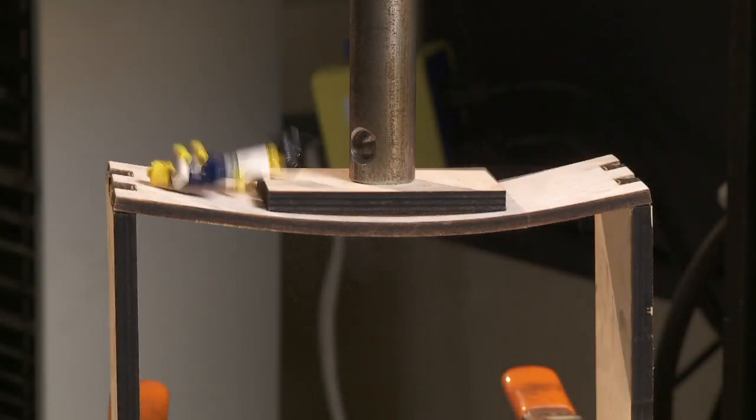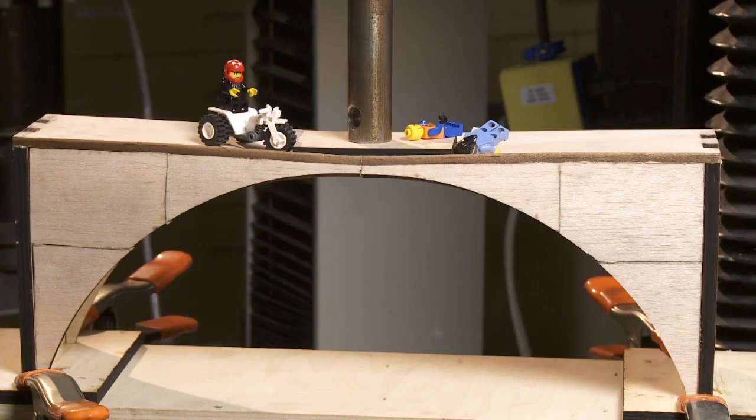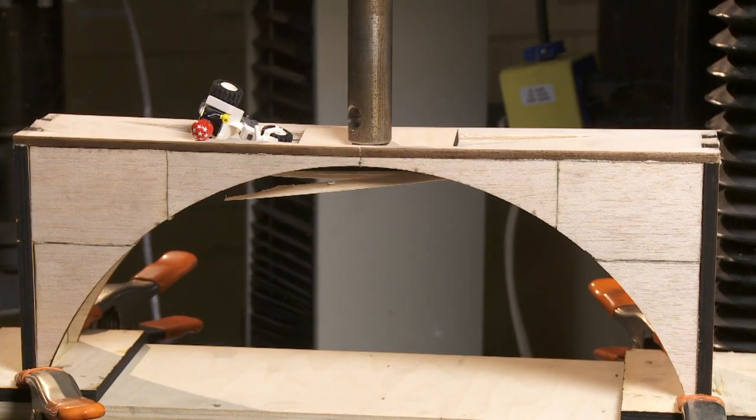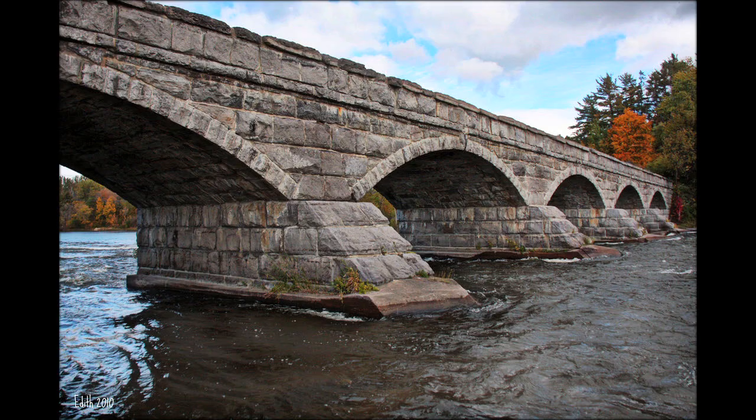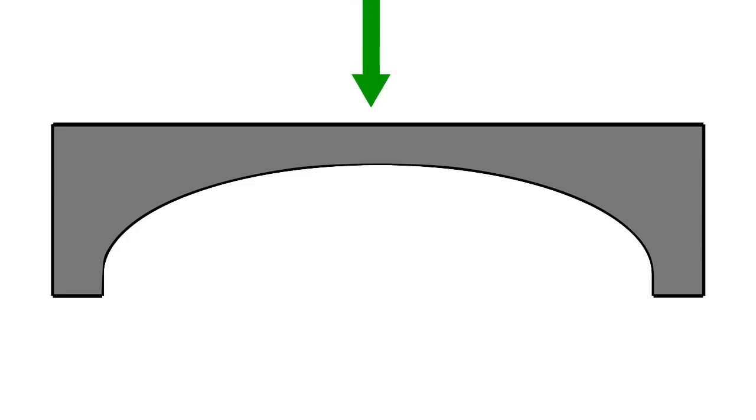Here we have seen that beam bridges get weaker as they get longer. Adding an arch makes the bridge very strong, but arches have length limitations. Beam and arch bridges historically have relied on wood and stone as building materials. These materials are usually only strong in compression and not in tension, which restricted the designs that could be used.